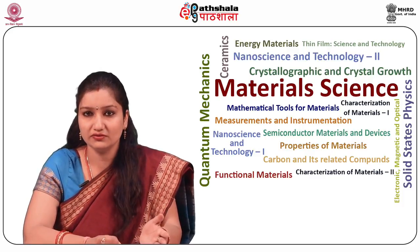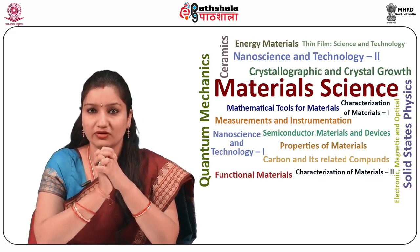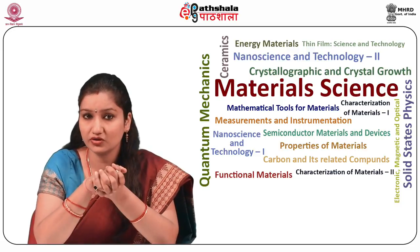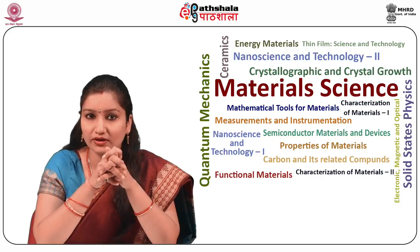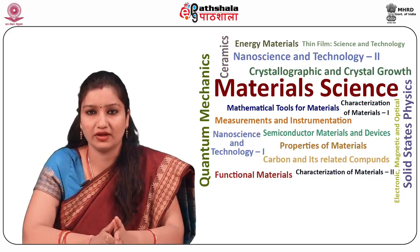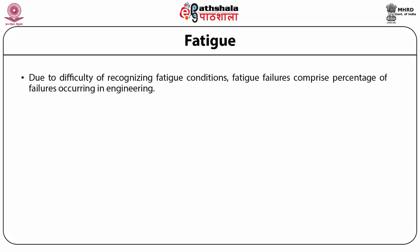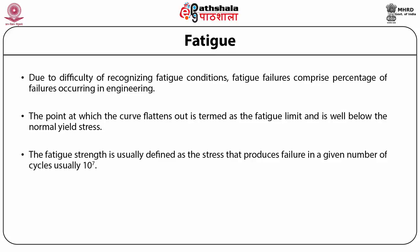There are many situations where fatigue failure will be very harmful. Under the following conditions, fatigue fracture progresses rapidly: first, maximum tensile stress of sufficiently high value; second, large variations or fluctuations in applied stress; and third, large number of cycles of applied stress. Fatigue failures comprise a significant percentage of failures occurring in engineering. The point at which the S-N curve flattens out is termed the fatigue limit, which is well below the normal yield stress. Fatigue strength is usually defined as the stress that produces failure in a given number of cycles.